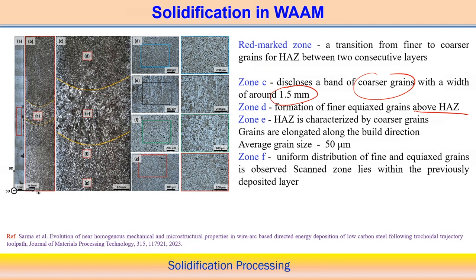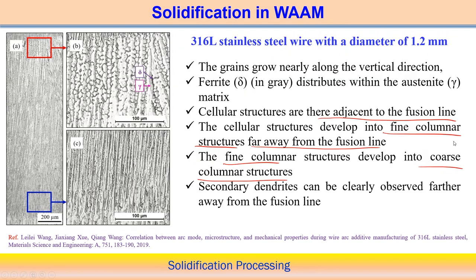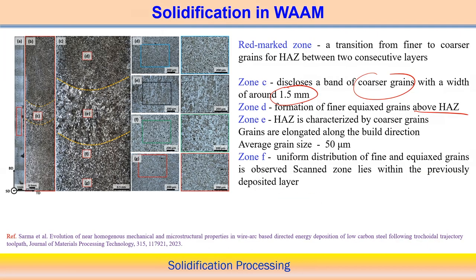Zone E corresponds to the heat affected zone, characterized by coarse grain structure elongated along the build direction — which is expected since grains grow nearly in the vertical direction. The average grain size in this zone is around 50 micrometers, so while we call it coarse, the average grain size is 50 µm.